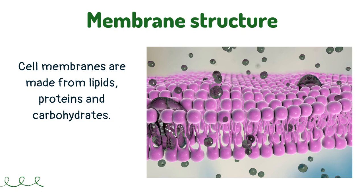Cell membranes are made from lipids such as phospholipids and cholesterol, proteins, and carbohydrates. Some of the proteins and the lipids have carbohydrate chains attached, and if they do they are called glycoproteins and glycolipids.